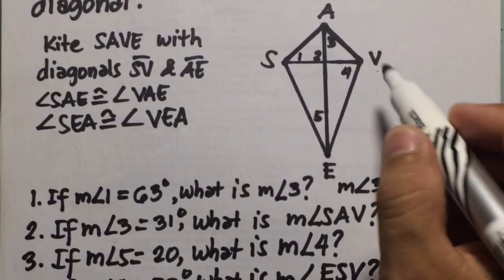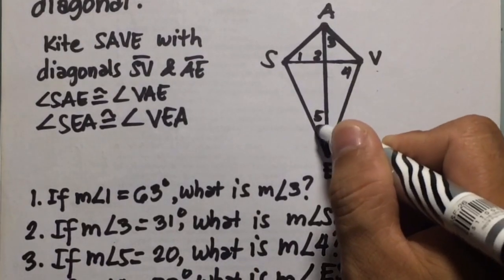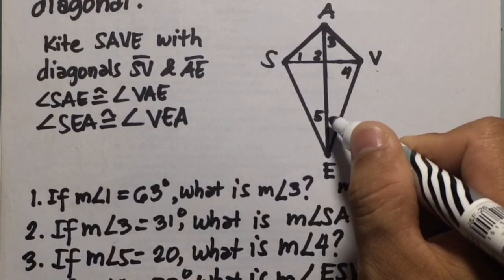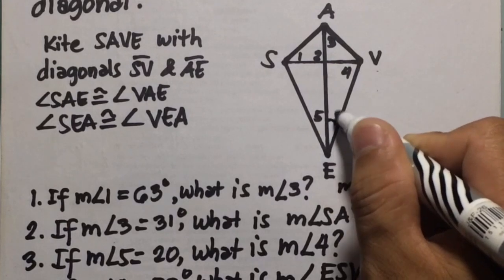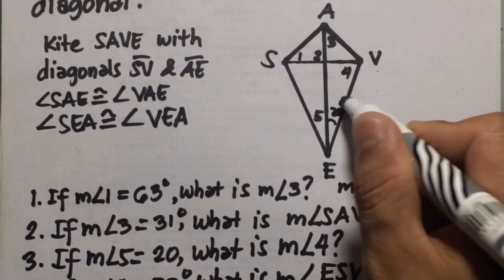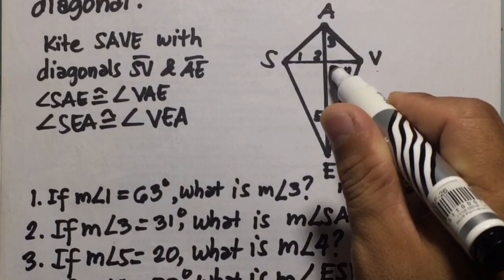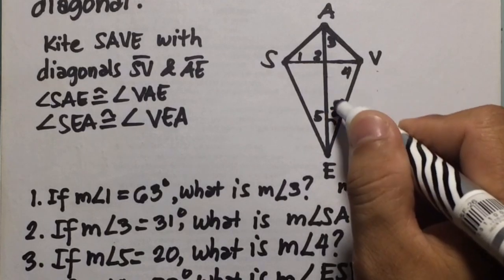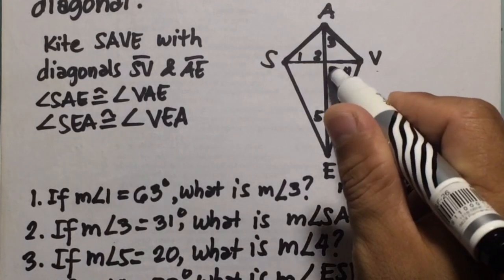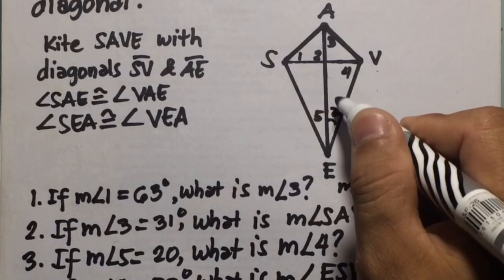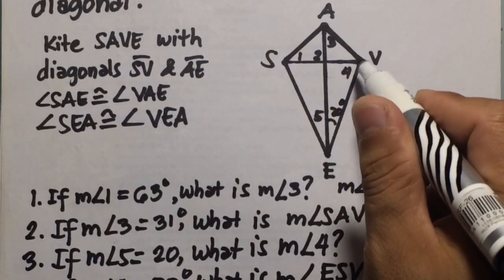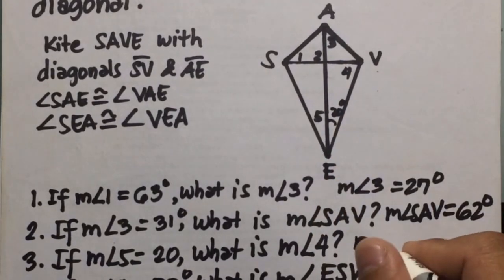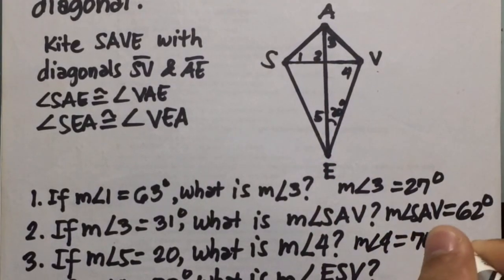Number three: if the measure of angle 5 is 20, what is the measure of angle 4? If this is 20, the congruent part is also 20, and the right angle is 90. So the sum of those two is 110, and the total sum of the triangle is 180. Therefore, 180 minus 110 equals 70 degrees. The measure of angle 4 is equal to 70 degrees.